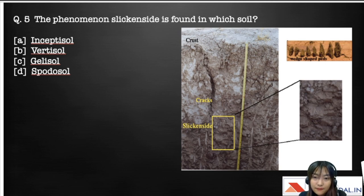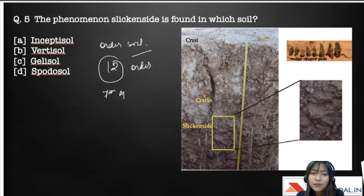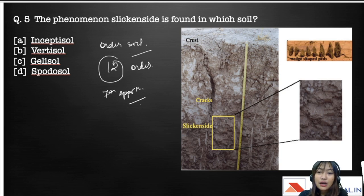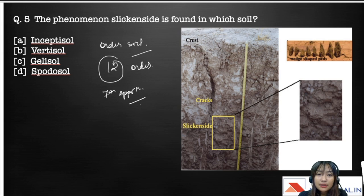The last question: the phenomenon of slickensides is found in which of the following soils? The options are A) Inceptisols, B) Vertisols, C) Gelisols, D) Spodosols. This question is based on the orders of soil. There are 12 orders formed under the Seventh Approximation system, developed under the leadership of Dr. Guy D. Smith, also known as the father of soil taxonomy. The correct answer is Vertisols.